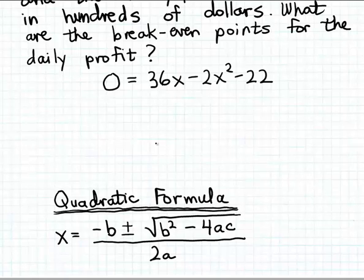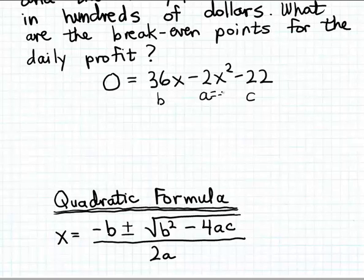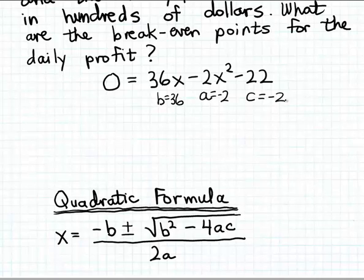To use the quadratic formula you need to know the three coefficients: the leading coefficient, normally labeled a; the coefficient of the unknown to the first power, labeled b; and the constant coefficient, labeled c. In this example, the leading coefficient a is minus 2 — that's the coefficient of the squared term. The b coefficient is 36, and the constant coefficient c is minus 22.